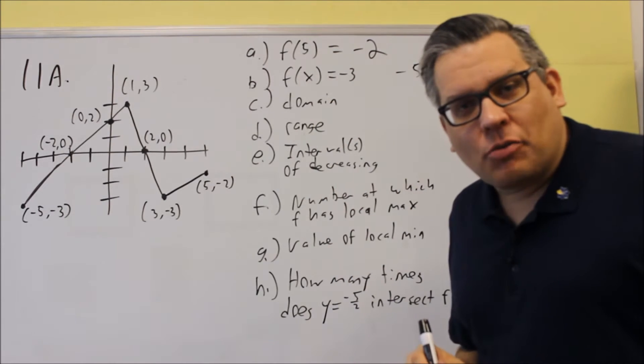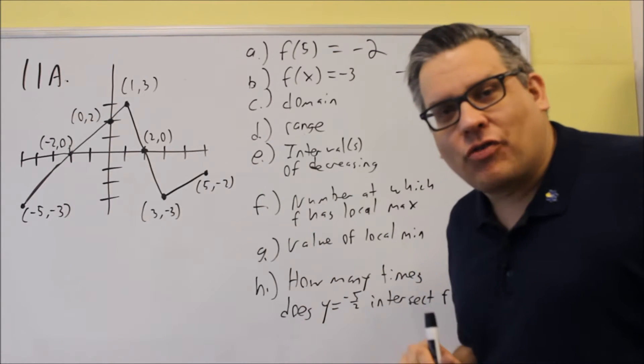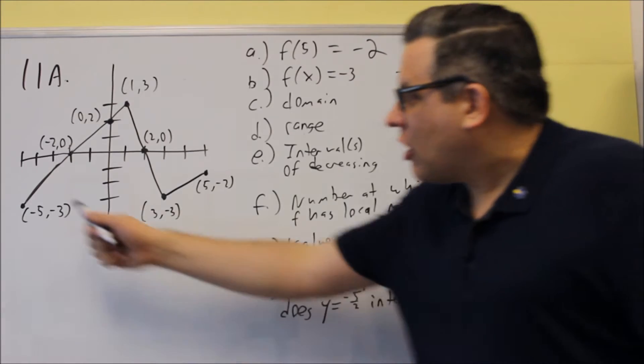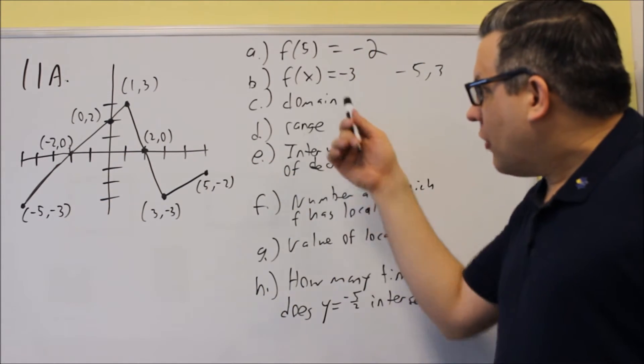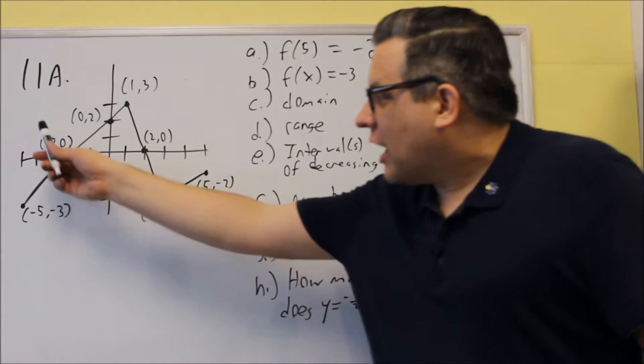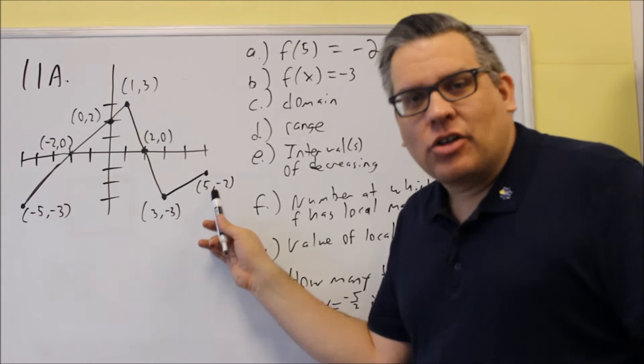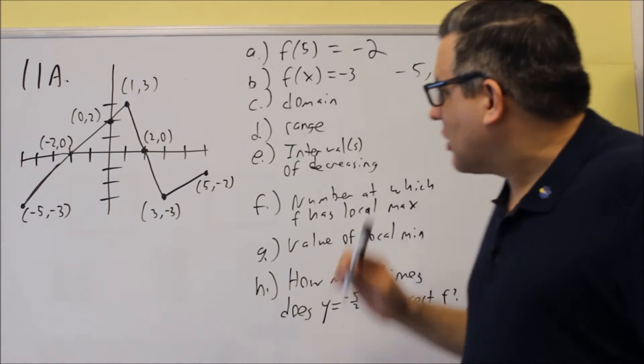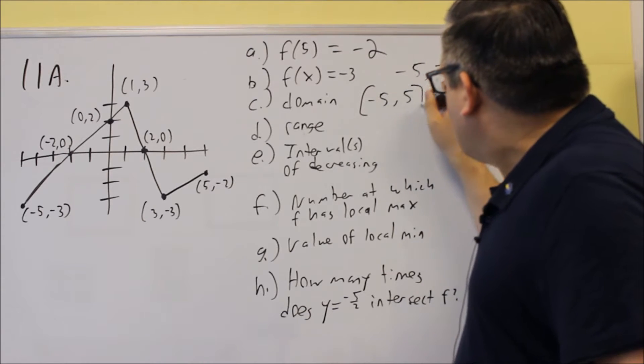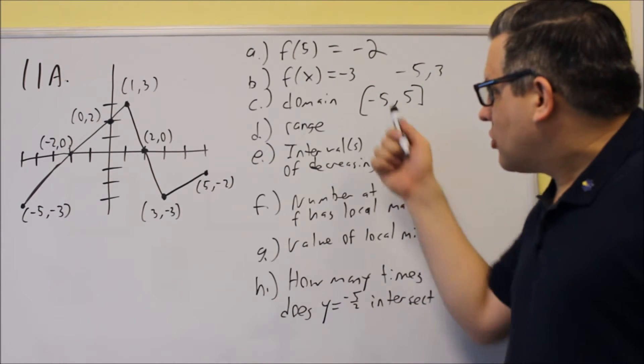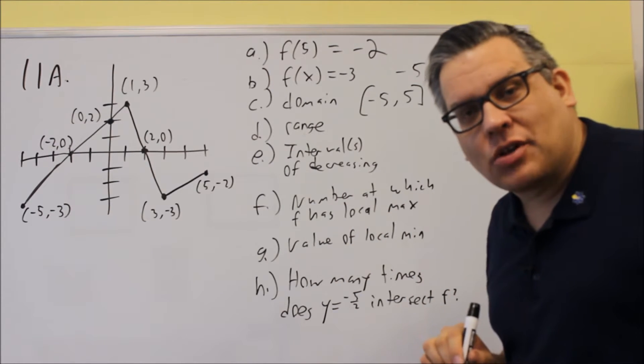Next, for domain, domain is talking about the x values that make a function defined, or the x values that the graph uses. Now all these are closed circles here, which means that we're including all the endpoints. Now for domain, we look at the smallest x value and then the highest x value, and we're going to write that as an interval. In this case, we're going to put negative 5 to 5, and that's going to be in brackets. Smallest x value and the highest x value. Interval notation, the smaller number has to come first.